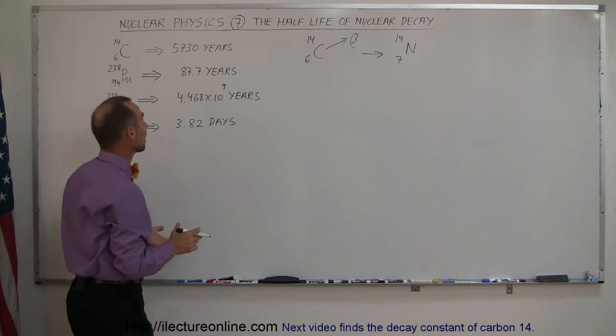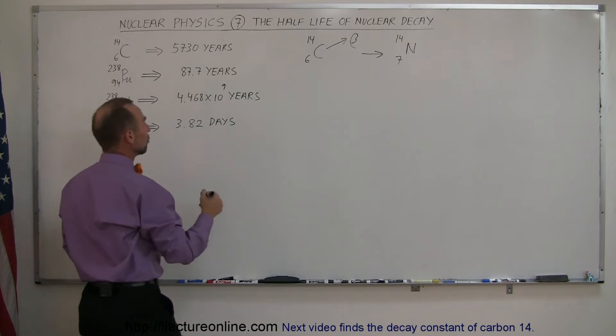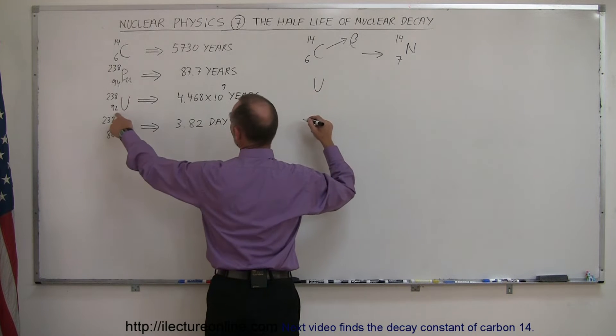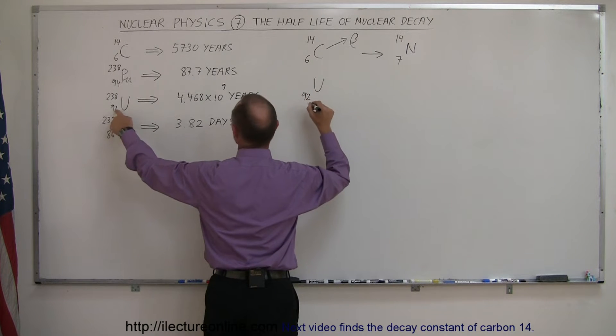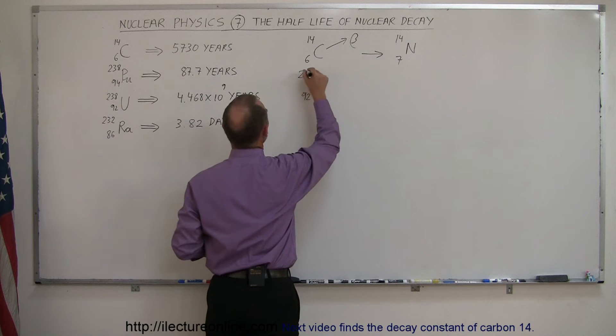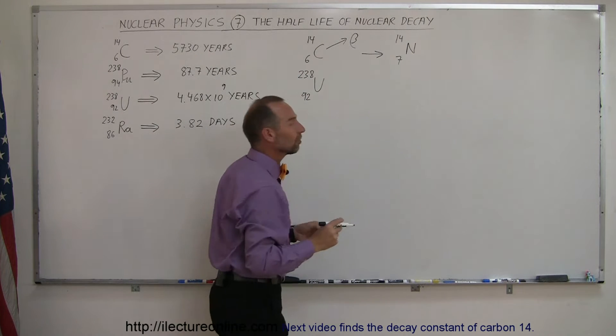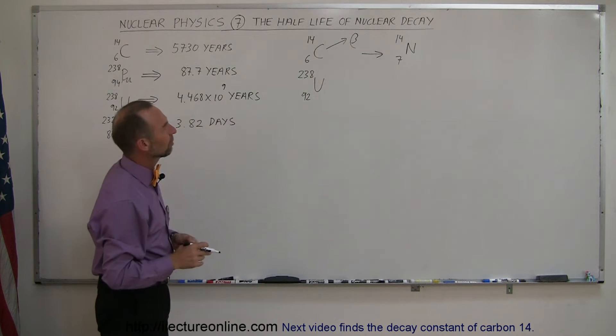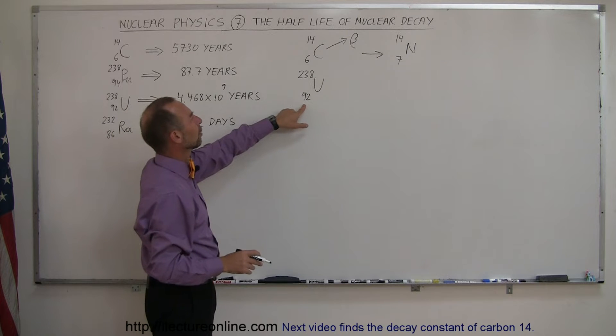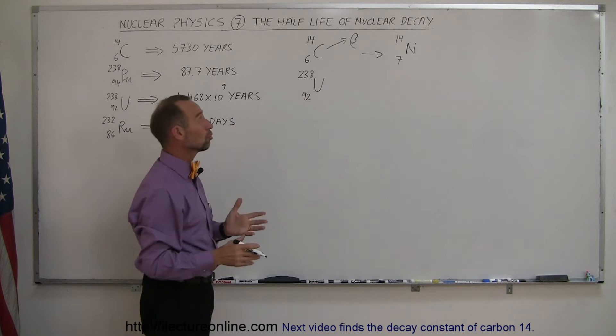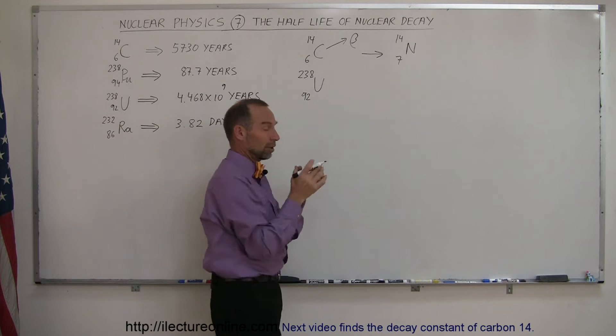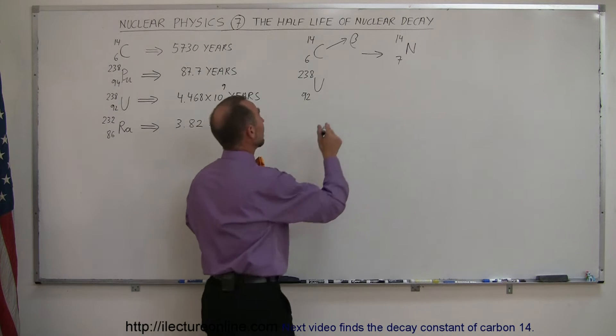Another example of radioactive decay is when we take uranium-238. Uranium, of course, has 92 protons and a total of 238 nuclear particles or nucleons in the nucleus. That means if there's 92 protons, it looks like it has 146 neutrons. But once in a while, if you have a clump of radioactive uranium-238, a uranium atom will shoot out what we call an alpha particle.